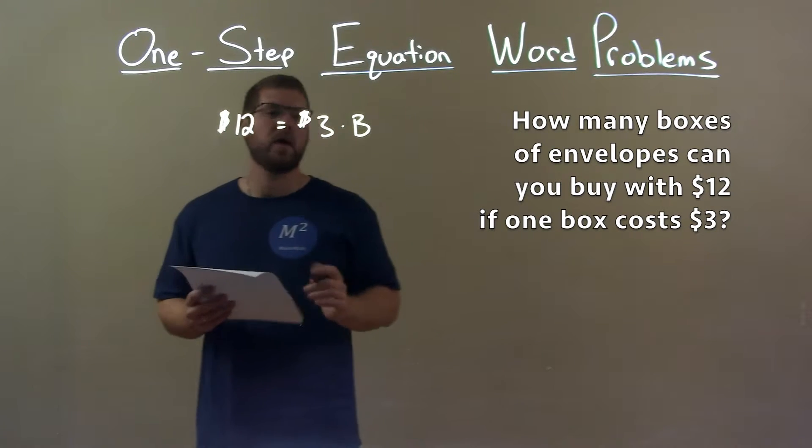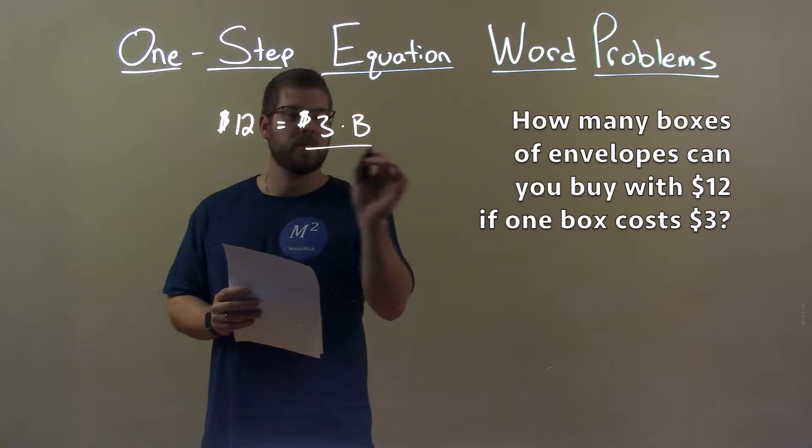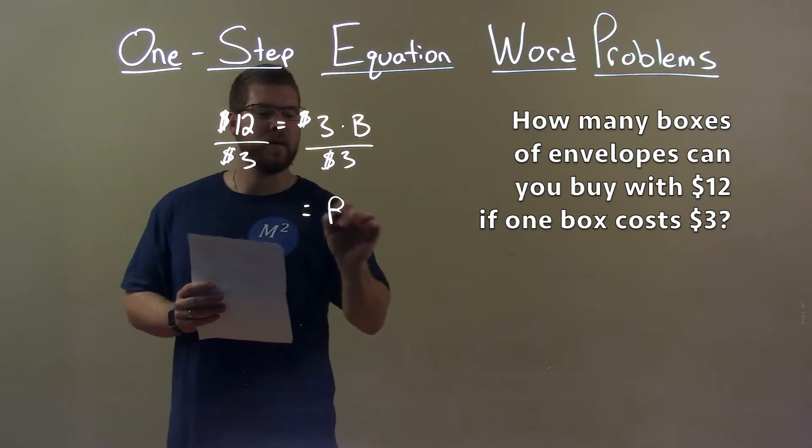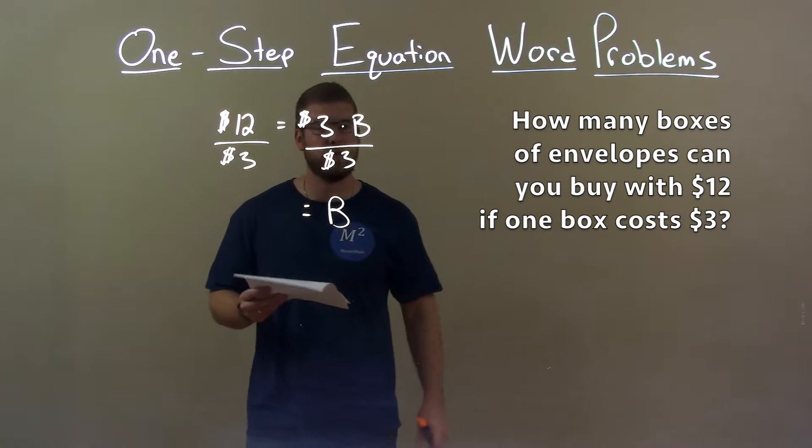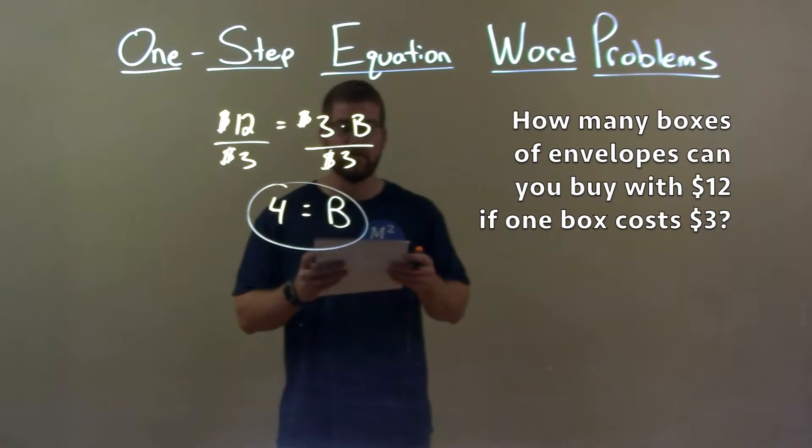Now, let's solve for B. We're multiplying B by $3, so to set a multiplication, division. Divide both sides by 3, and I'm left with B by itself. Now, $12 divided by 3 is 4, and so my final answer here is 4 boxes of envelopes.